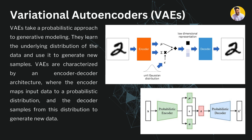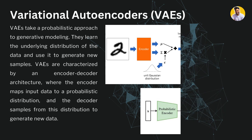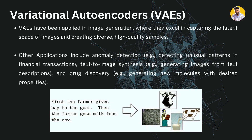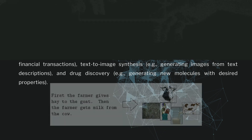Variational Autoencoders take a probabilistic approach to generating new content. They learn the underlying distribution of the data and use it to generate new samples. VAEs are characterized by an encoder-decoder architecture where the encoder maps input data to a probabilistic distribution and the decoder samples from this distribution to generate new data. They have been applied to image generation, capturing the latent space of images to create diverse high-quality results. Other applications include anomaly detection, text-to-image synthesis, and drug discovery.